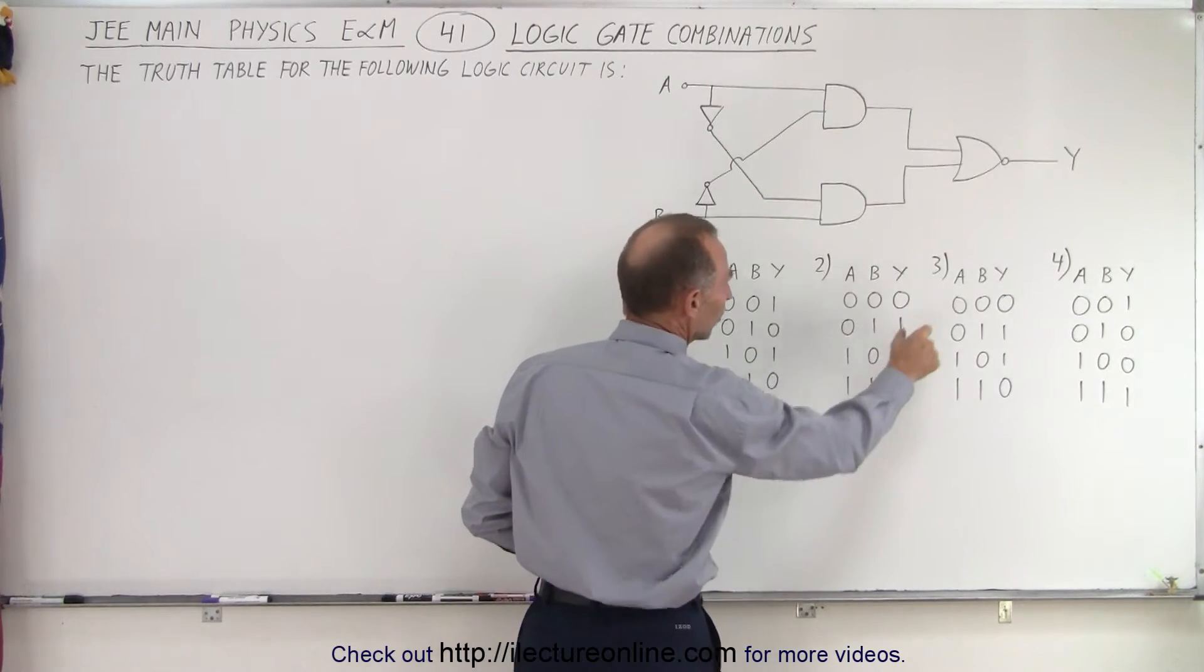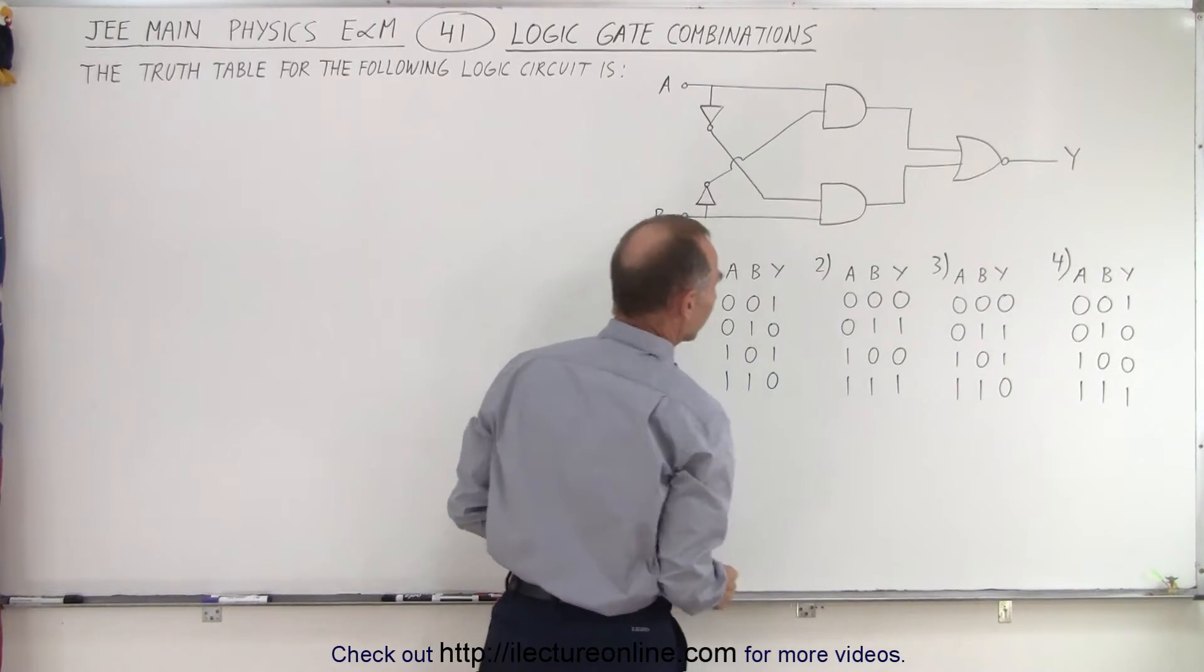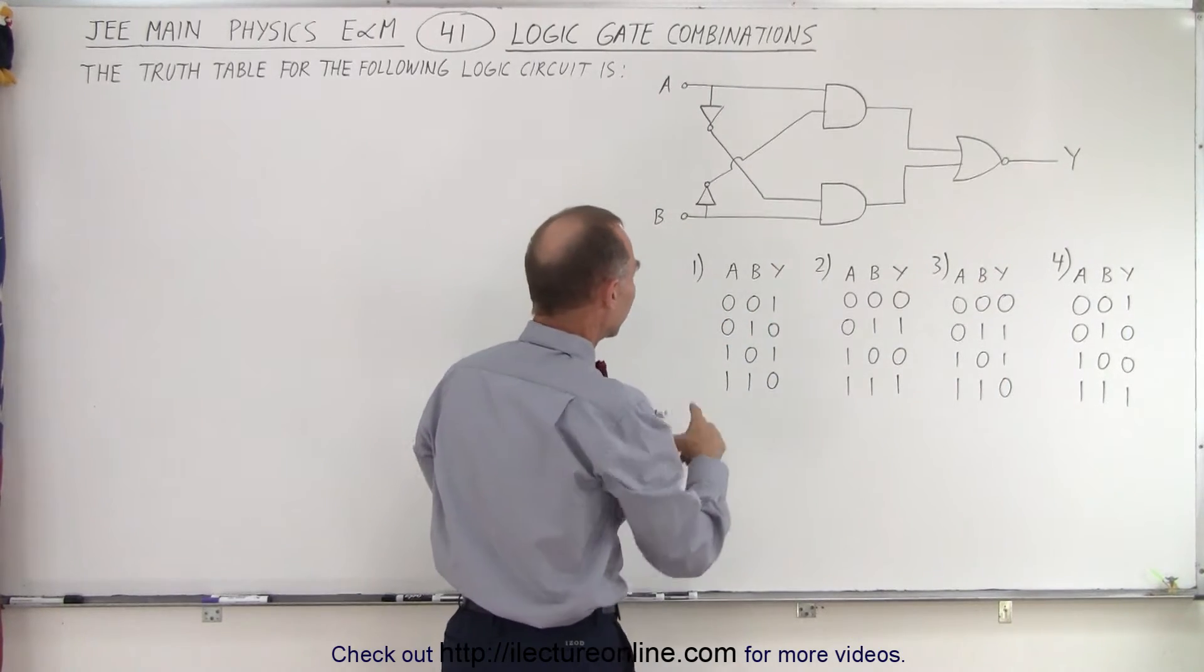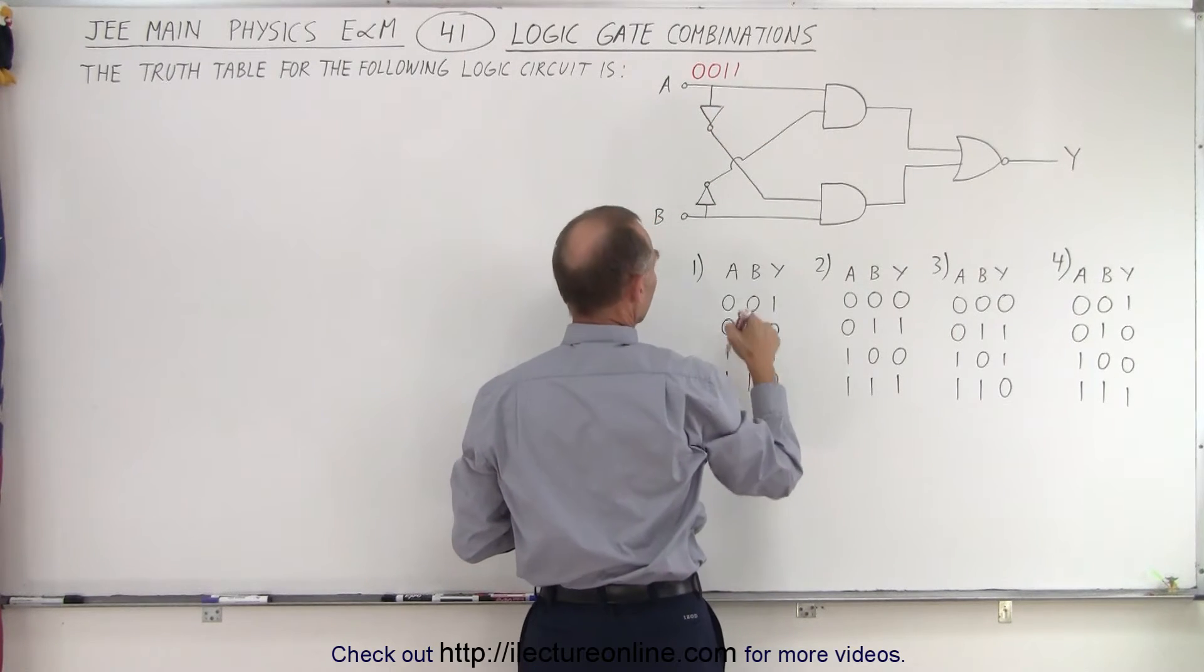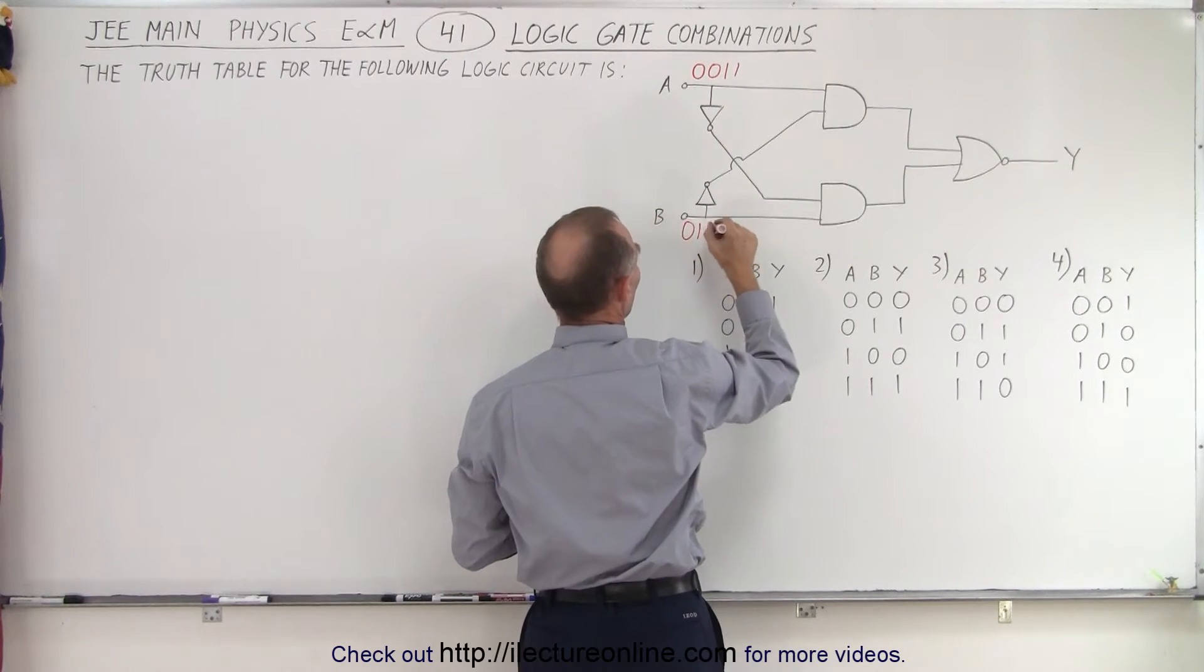Notice that the first two columns are the same for all four answers. So let's go ahead and put those down for A. So we have a 0 0 1 1, and over here at B we have a 0 1 0 1.